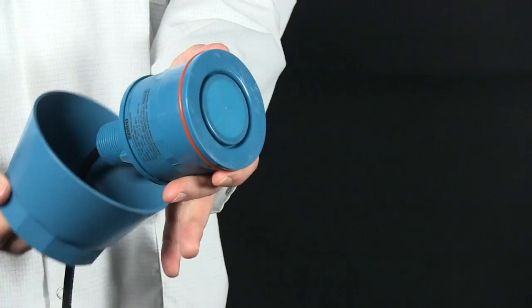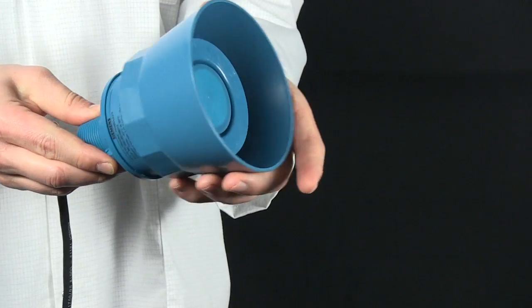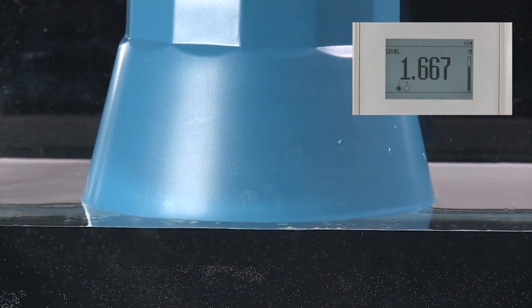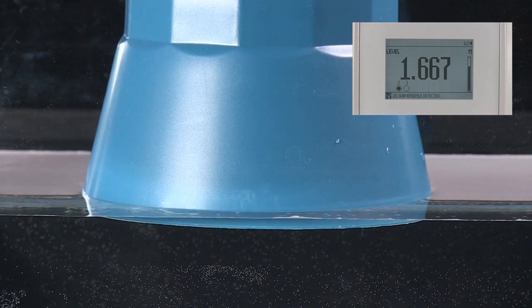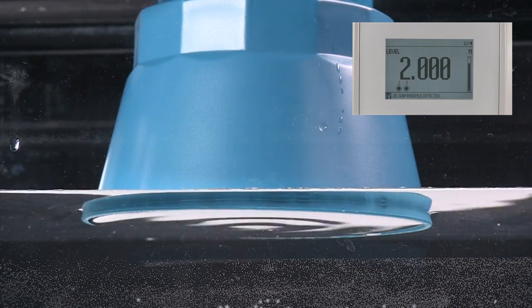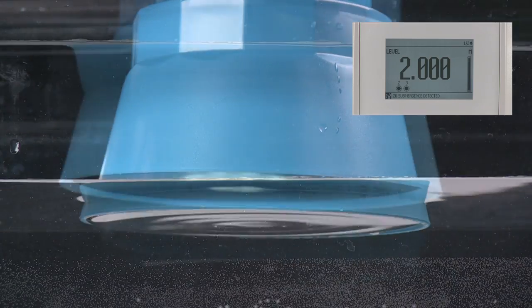A simple remedy is using a submergent shield. A submergent shield on a transducer creates an air pocket in front of the transducer face when it becomes submerged. The controller senses this condition and recognizes it as flooding.